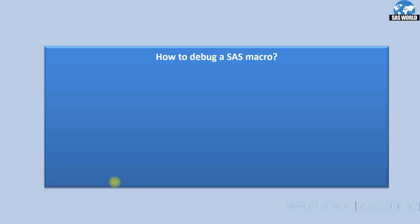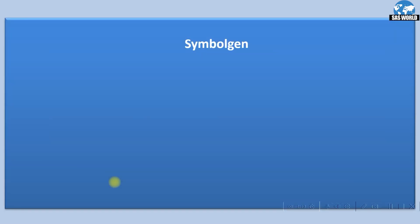The question is how to debug a SAS macro. This is the most important question and 95 to 99% of interviewers would ask a question on this topic. There are three ways to debug a SAS macro: symbolgen, mprint, and mlogic. If you want to disable these options, then use no symbolgen, no mprint, and no mlogic.